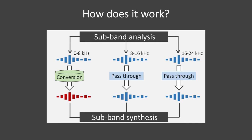First, we use sub-band multi-rate processing on the input audio to obtain sub-band signals on three bands: 0 to 8 kHz, 8 to 16 kHz, and 16 to 24 kHz. Then, only the lowest band signal is converted with a DNN and the higher band signals are passed through. Finally, the full band converted speech is synthesized from each sub-band signal.